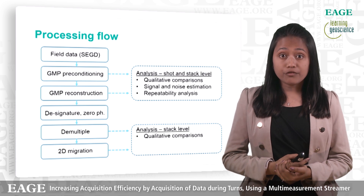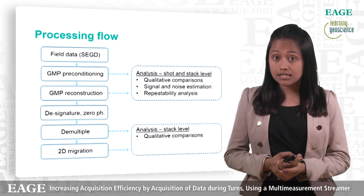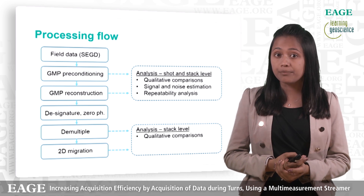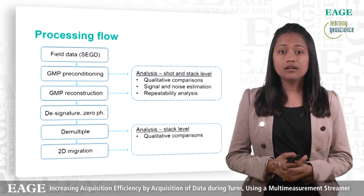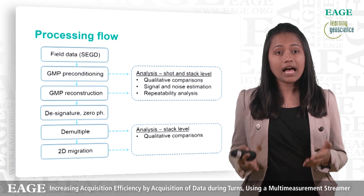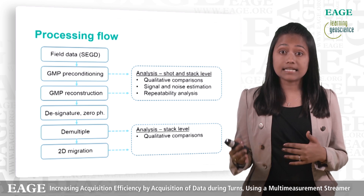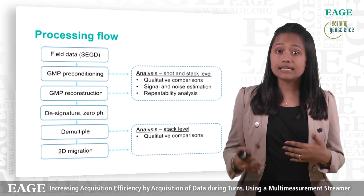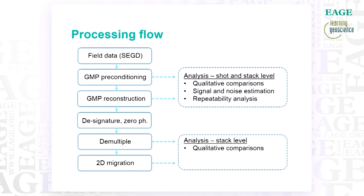The starting point for the processing flow was after acquisition data conditioning. Following this, we performed the GMP preconditioning and subsequent GMP wavefield reconstruction and separation. The majority of the analysis were performed at this stage and were in the form of both quantitative and qualitative analysis performed at shot and stacked levels. The GMP data was then taken through further processing sequence, which included designature and zero phasing, demultiple using SRME, and then a 2D Kirchhoff pre-stacked time migration. This was done to assess the consequences of having acquired the data during turns, which could possibly be identified in some downstream processing, with additional QC done at stack level.